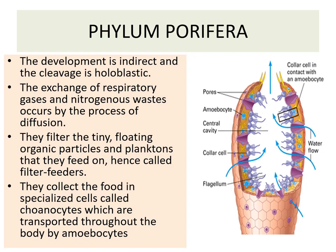The exchange of respiratory gases and nitrogenous waste occurs by the process of diffusion. They are filter feeders as they filter tiny floating organic particles and planktons on which they feed. They collect the food in specialized cells called coanocytes, which are transported throughout the body by specialized cells known as amoebocytes.